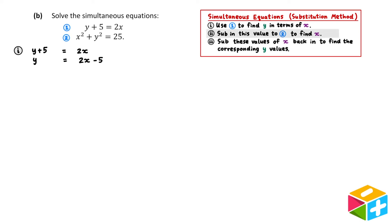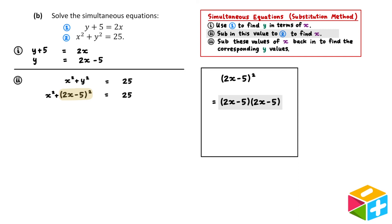Now for step ii. We'll sub in this value of y we just found into equation 2 and then solve for x. Equation 2 states that x squared plus y squared is equal to 25. We found that y is equal to 2x minus 5. So, in equation 2, I'm going to replace the y with a 2x minus 5. From here, let's focus on expanding out this 2x minus 5 all squared. Squaring a number is the same thing as multiplying that number by itself. So, 2x minus 5 squared is the same as 2x minus 5 times 2x minus 5.